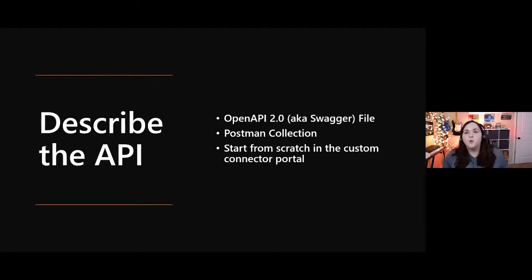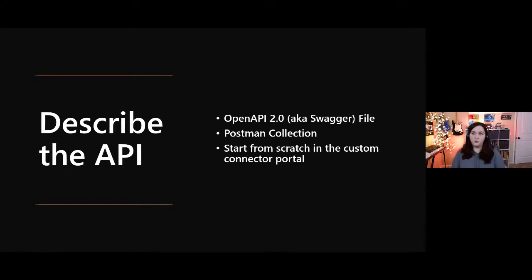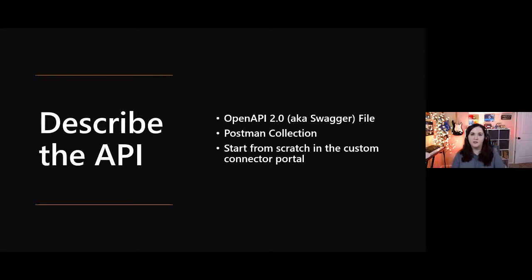As for how to describe the API so the custom connector can read it and you can import it into the Power Platform — you can use three different things. First, you can use OpenAPI 2.0, also known as a Swagger file. Or you can use a Postman collection — you can save your API in Postman as a collection and import that directly into the Power Platform as a custom connector. Or you can start from scratch, building your connector directly within the Power Platform.